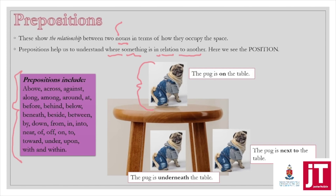Have a look here at the pug — the first example. The pug is on the table. Can you help me point out the nouns? Pug is one, and table is the other one. Those are the two nouns in the sentence. The preposition is helping me understand that the pug is on the table — he's sitting on the table, his little feet are on the table.